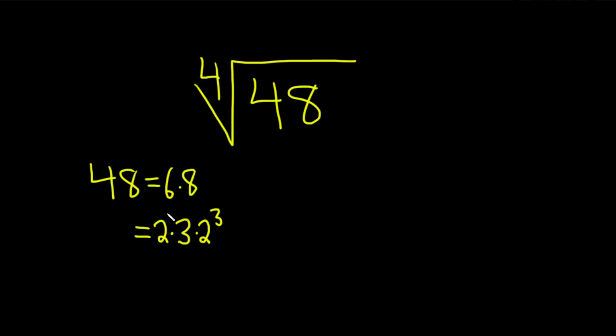And so you'll notice that there's a 2 to the 1 here and a 2 cubed here. So you can multiply these. And when you do that, you basically add the exponents. This is going to become 3 times, and then you add 1 plus 3 is 4. So this is 2 to the 4.